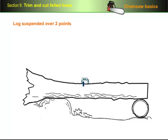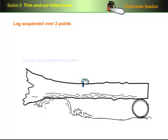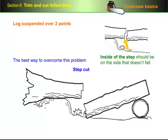Now let's go back to our first example of the log suspended over two points. This time though, we've got a slightly different situation. This end can't move when the log is cross cut, so only this end will fall. One of the problems with this scenario is that the saw might get caught and be pulled down by the falling piece. The best way to overcome this problem is to use a step cut when you do the up cut. Note that the inside of the step cut should be on the side that doesn't fall.